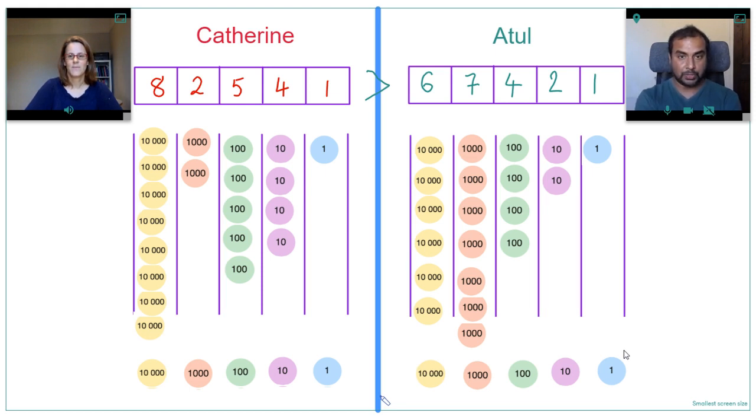This is a great visual because you can immediately tell that there are eight of the highest value counters and six of the highest value counters. On my side you can see 60,000, and you can see 80,000. That takes it from 'my eight is bigger than six' to 'I can see 80,000 versus 60,000,' and the rest of the digits are irrelevant because those are the biggest numbers. Yeah, I like it.